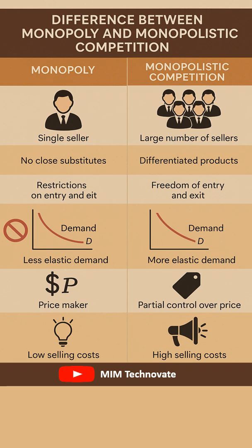In a monopoly, the firm acts as a price maker, thereby allowing the possibility of price discrimination. In monopolistic competition, firms possess partial control over pricing due to the presence of product differentiation.